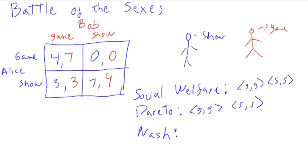What about this one, game-game? They're both here. If Bob is going to the game, then clearly Alice—she has 3 or 4—so she's going to go for the 4. She's going to go to the game also. Similarly, if Alice is going to the game, Bob is looking at either 7 or 0, so clearly 7 is better. So Bob is going to go to the game, so this is a Nash equilibrium.